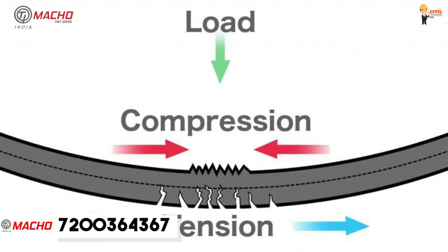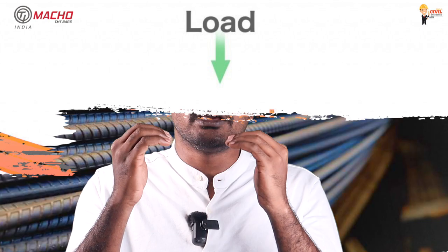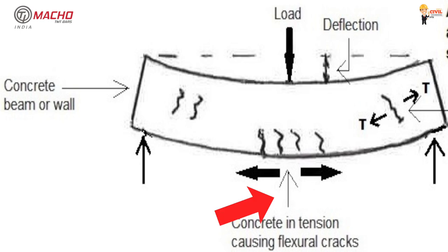There are two types of stress in a building: compression and tension. When we have a slab, the top face experiences compression and the bottom experiences tension. If not handled correctly, a building can collapse. When using a slab like a 'U' shape, the tension is on the lower side — this is very important to understand.